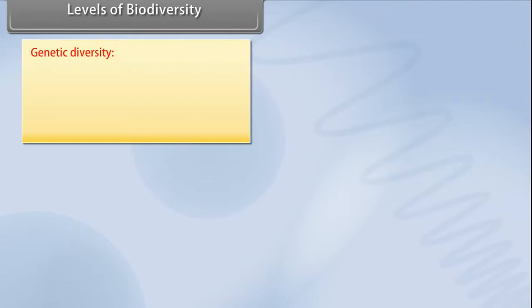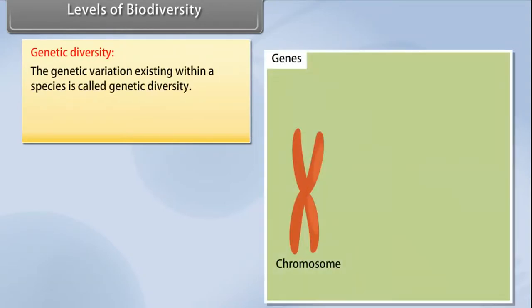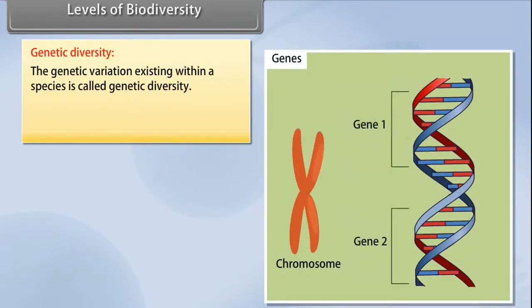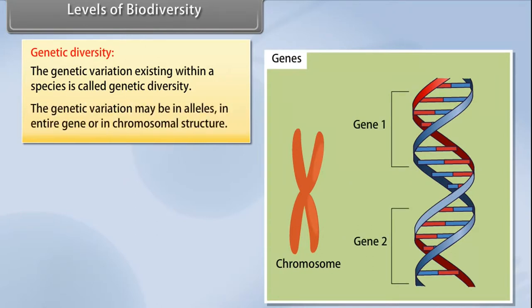Genetic diversity: the genetic variation existing within a species is called genetic diversity. The genetic variation may be in alleles, in entire genes, or in chromosomal structure.